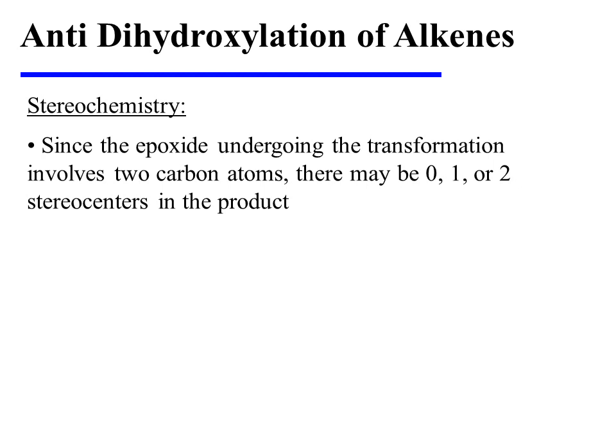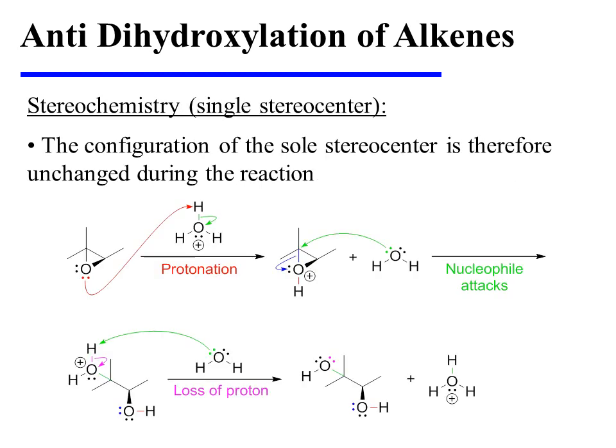In the previous examples, no stereocenters were formed during the course of the reaction. However, it's important to note that epoxide opening may sometimes yield one or two stereocenters in the product. Let's first consider examples in which the product contains a single stereocenter. In this instance, an epoxide substrate bearing a single stereocenter is subjected to aqueous acid. The reaction begins with the protonation of the epoxide oxygen. The oxonium ion thus formed is attacked by water at the center bearing the greater partial positive charge — that is the more highly substituted center, which happens to be tertiary in this instance.